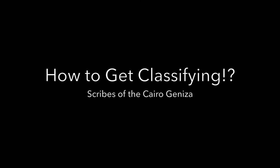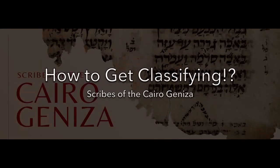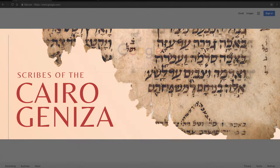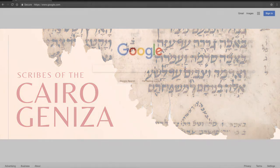Hey everybody, this is Laura Neumann-Ekstein. I'm the Judaica Digital Humanities Coordinator here at the Penn Libraries. I'm here to talk to you today about Scribes of the Cairo Geniza, a new Zooniverse project in partnership with us here at the Penn Libraries, the Princeton Geniza Project, and the JTS Libraries.